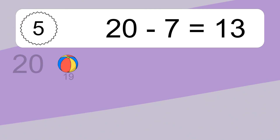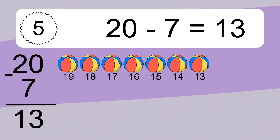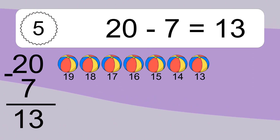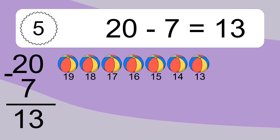20 minus 7 equals what? 20 minus 7 equals 13. Let's count it: 19, 18, 17, 16, 15, 14, 13.